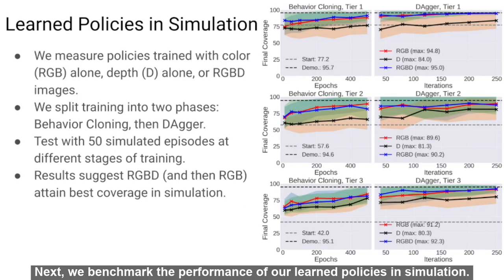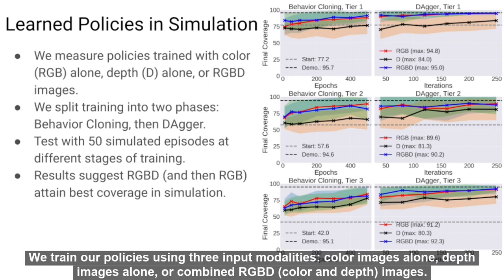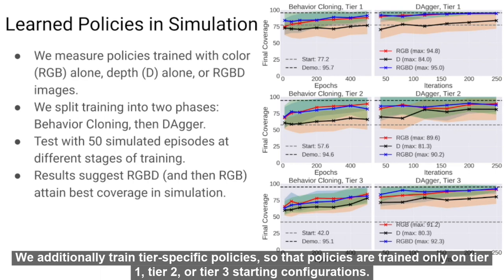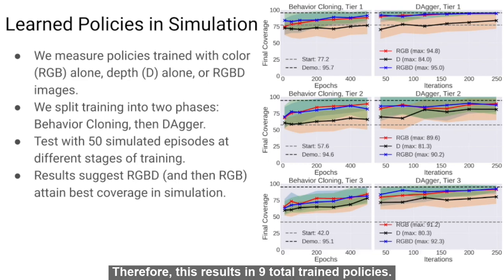Next, we benchmark the performance of our learned policies in simulation. We train our policies using three input modalities: color images alone, depth images alone, or combined RGBD (color and depth) images. We additionally train tier-specific policies so that policies are trained only on tier 1, tier 2, or tier 3 starting configurations. This results in nine total trained policies.